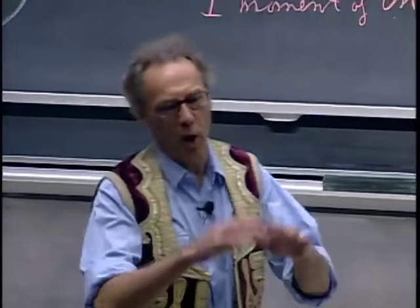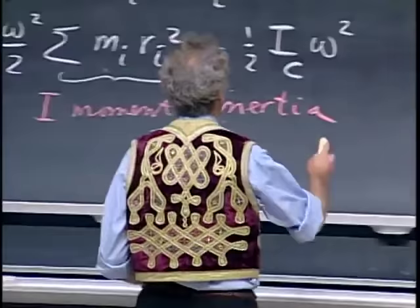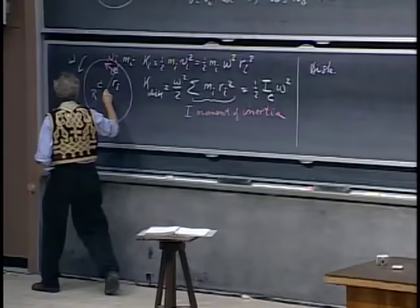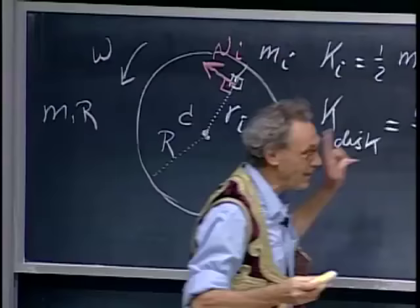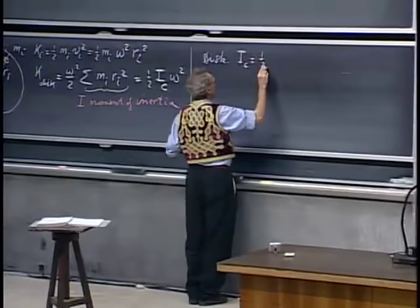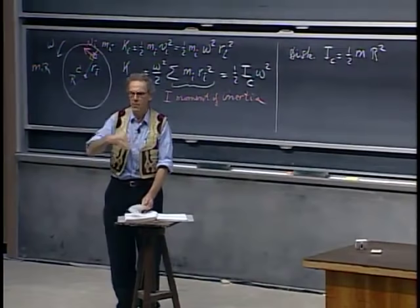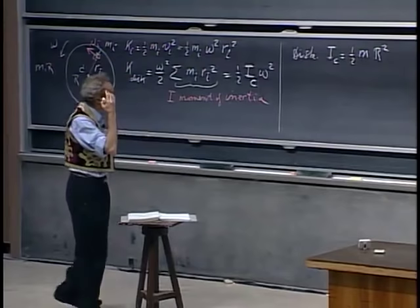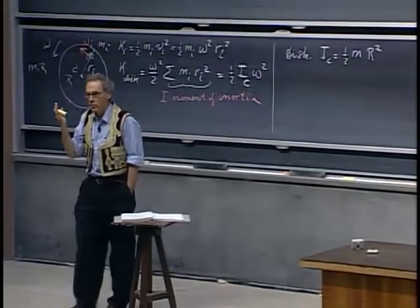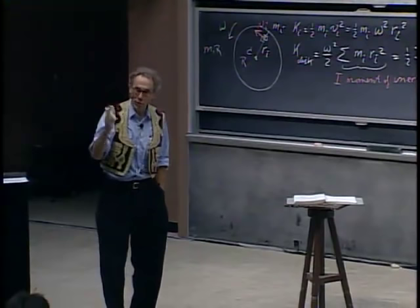I'm not going to derive it for you. If the object is nicely symmetric, you can generally do that integral. In this case for a disk rotating about an axis through the center, perpendicular to the disk — that's essential — the moment of inertia equals one-half m times r-squared. I don't even want you to remember this; there are tables in books. The moment of inertia depends on what kind of object you have — whether a disk, sphere, or rod makes all the difference. What also matters is about which axis you rotate the object.